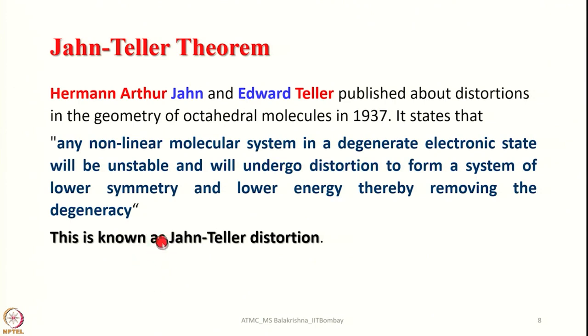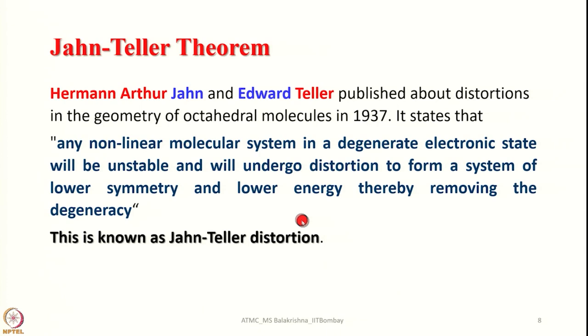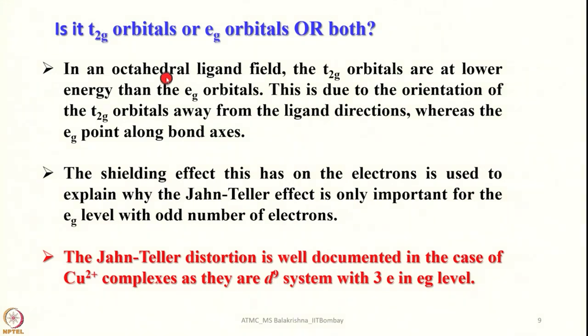This distortion is called Jahn-Teller distortion. It is especially pronounced when there is uneven occupation of electrons in the e_g orbitals. Ideal examples are the d⁴ system (chromium 2+) and the d⁹ system (copper 2+). The key question is: is Jahn-Teller distortion affected by filling of t_2g orbitals, e_g orbitals, or both? Let us try to answer this.